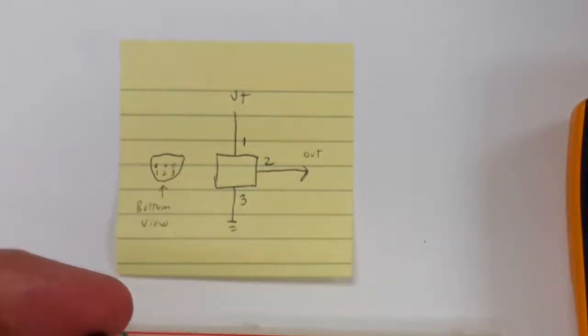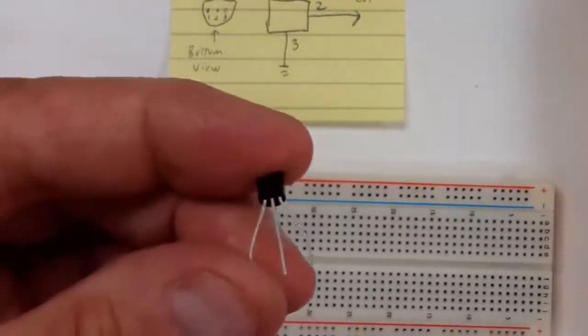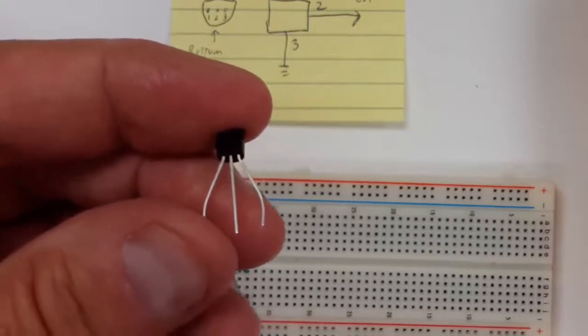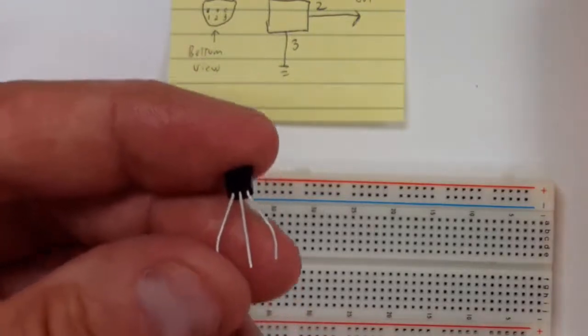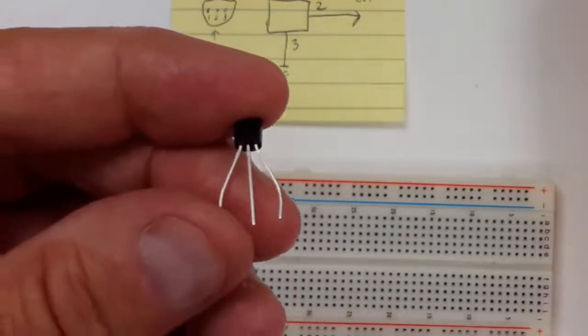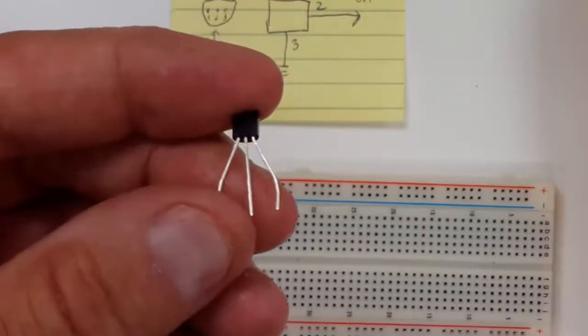The pinout is pin 1 on the left, which is the V plus pin. That's where you attach your positive voltage. The center pin is your output signal, and the last pin on the right is your ground signal, your ground connection.